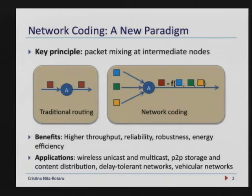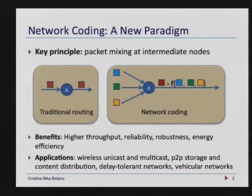Network coding questions and proposes a different way of building networks, starting with this very basic action. You are all used from networking classes to think about protocols as traditional routing, where any participant forwards the packet in the form it was received. Network coding proposes instead that a router will wait for a certain number of packets and then forward a linear combination of those packets — you receive several, you send only one out.